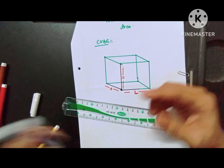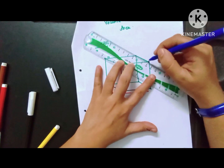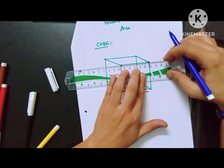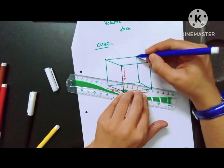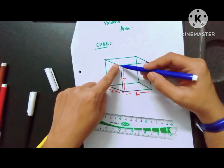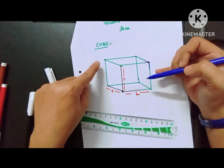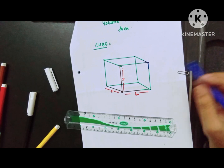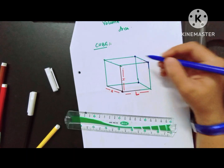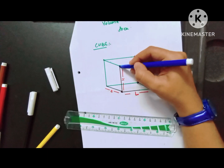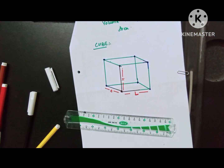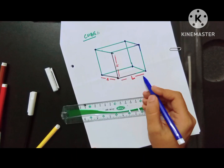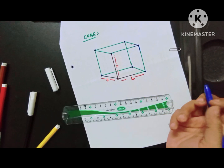From one point you can see three dimensions — one dimension is this, another is this, and then this one. From that one point you get three lines, and one line is called length, one is called breadth, and one is called height.